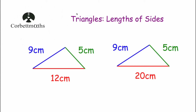Welcome to this Corbin Maths video. In this video we're going to look at triangles and the lengths of the sides of triangles. Here we've got two sketches of triangles: one with lengths of 5cm, 9cm and 12cm, and one with lengths of 5cm, 9cm and 20cm. One of these two triangles is impossible, and in this video we're going to see which one and why.